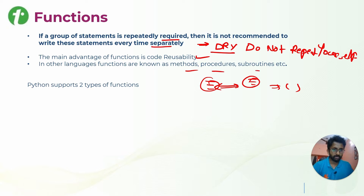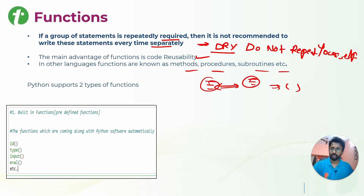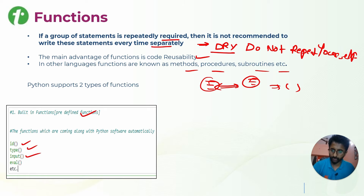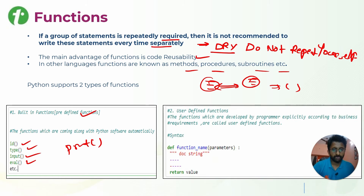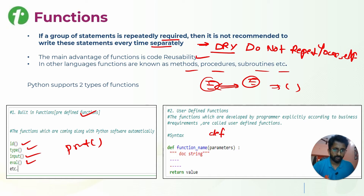In other languages, functions are also known as methods, procedures, subroutines, etc. There are two types of functions in Python. First are built-in functions — these are predefined, such as id, type, input, len, and print, which we have already seen in different chapters. Second are user-defined functions, which are developed by the programmer according to business requirements.